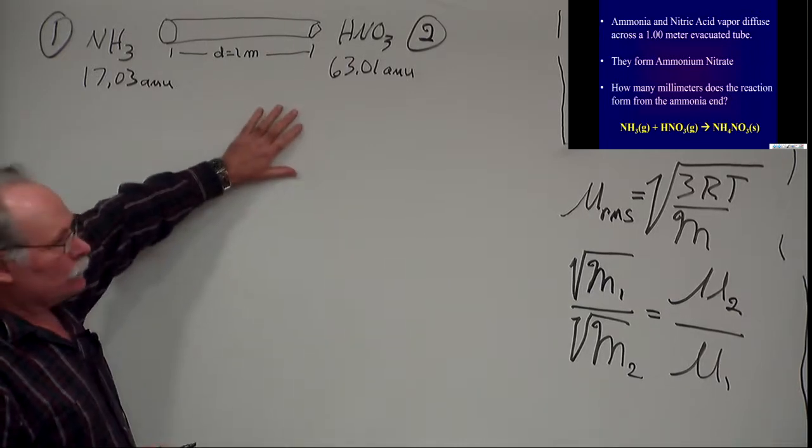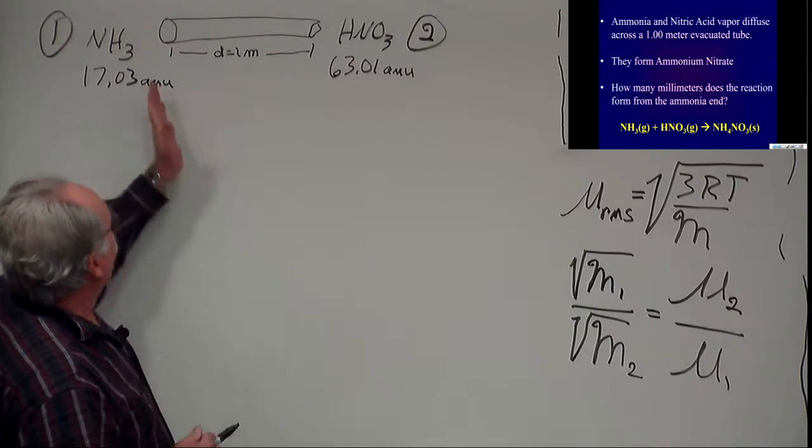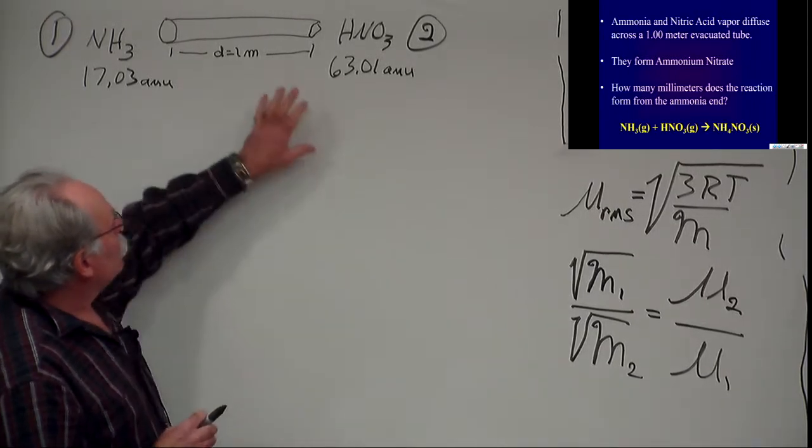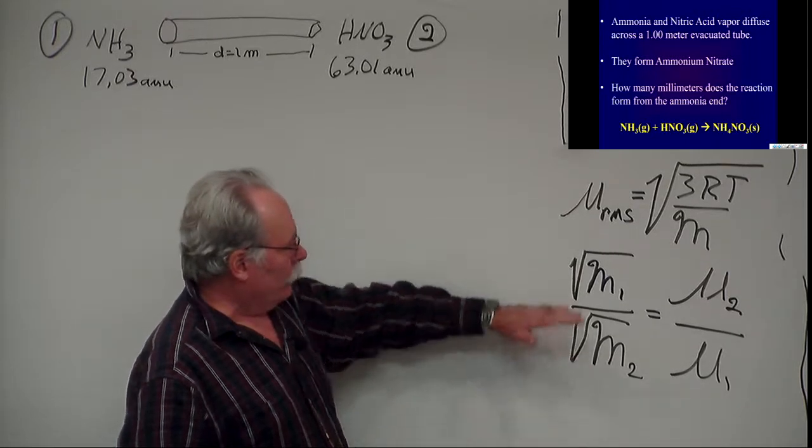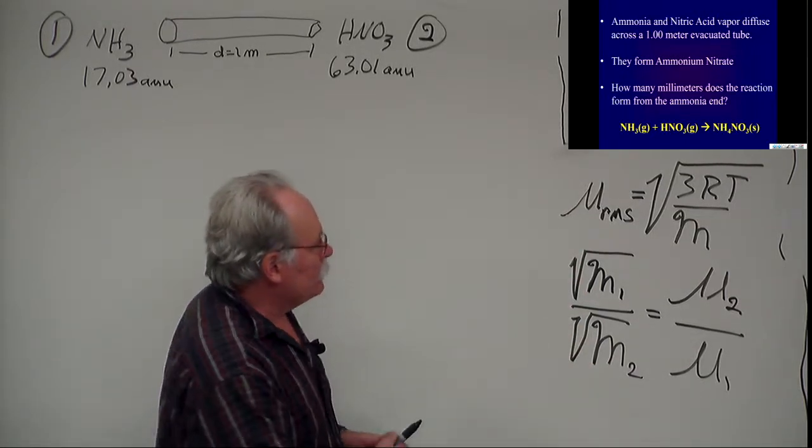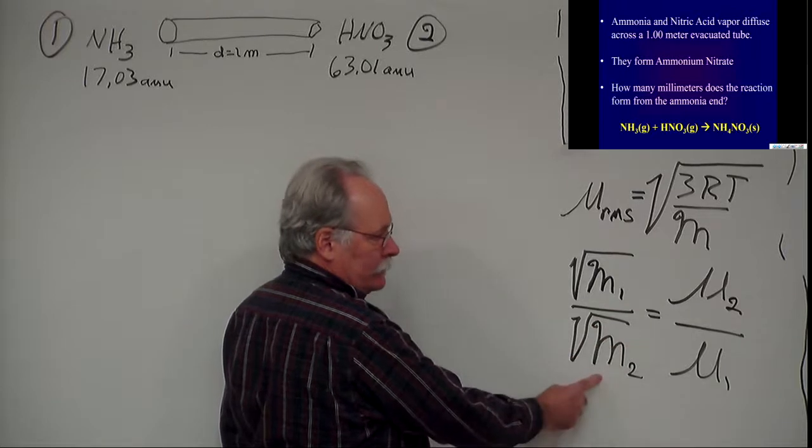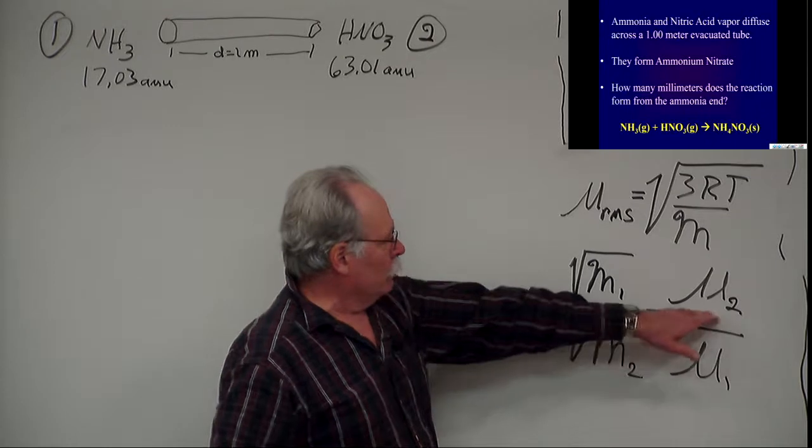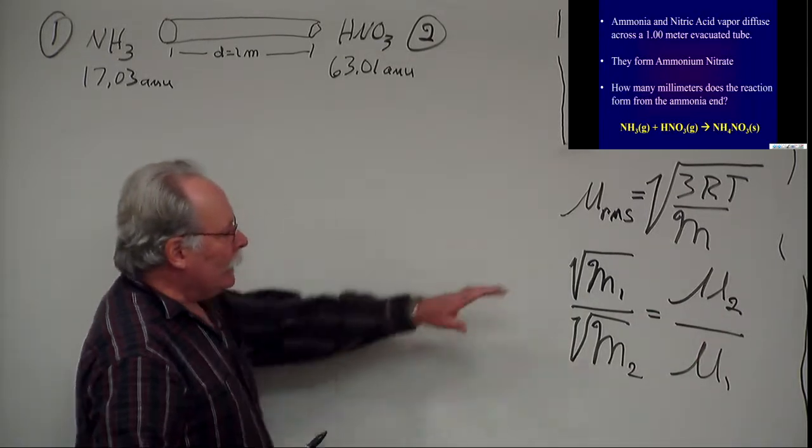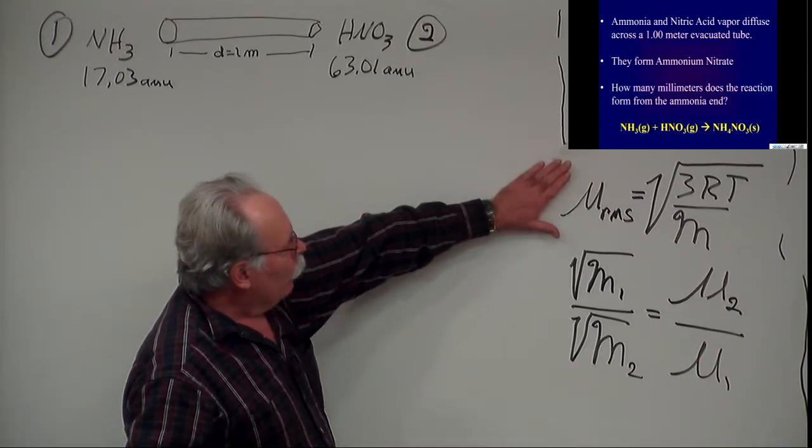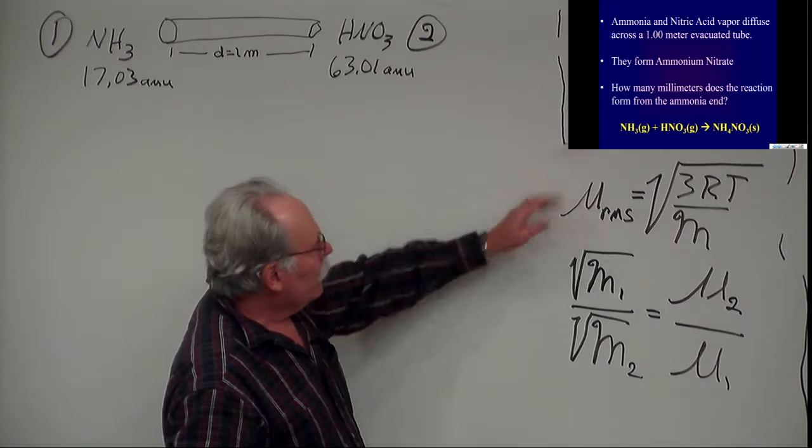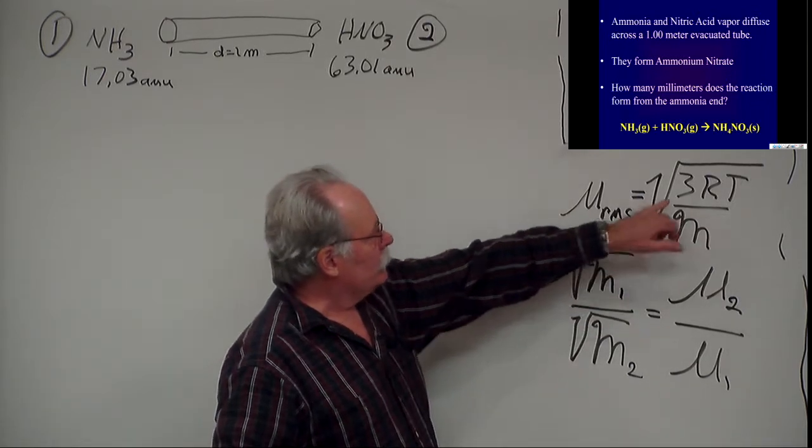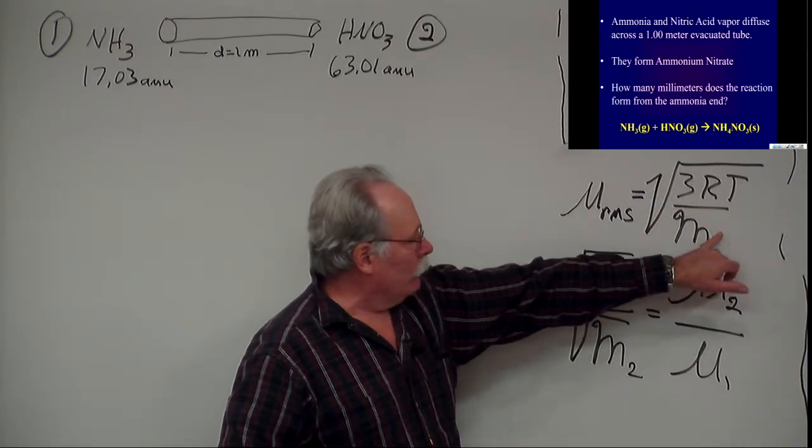We're going to use Graham's Law which says that the rate of effusion is inversely proportional to the molar mass. For two gases, we can relate them in this ratio, which says that the square root of the molar masses is inversely proportional to the root mean square velocity, where mu is the root mean square velocity. In the last section of the text, we covered kinetic molecular theory, and we showed how the root mean square velocity for an ideal gas is related to the square root of 3RT over the molar mass.